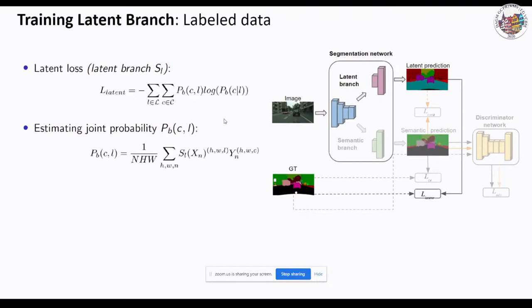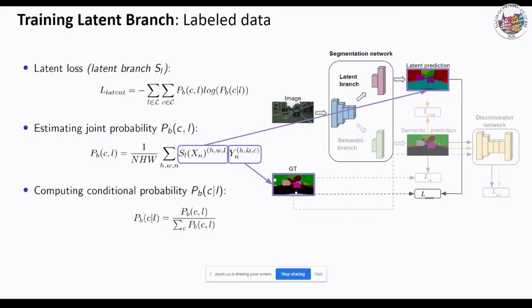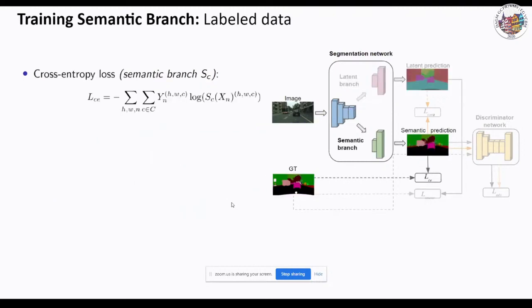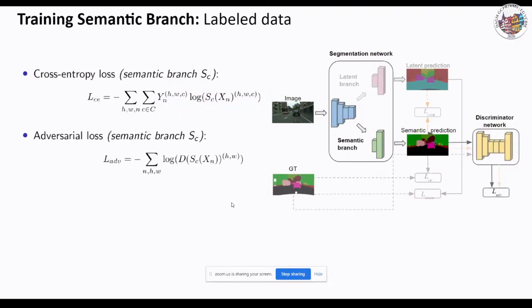To compute this loss term, we need to estimate the joint probability distribution and the conditional probability distribution of semantic and latent classes. We estimate the joint probability distribution component-wise for each possible pair of semantic and latent classes — as the normalized sum of probabilities for the latent variable to be activated for pixels with a given ground-truth value C. On the labeled data, the loss function for the semantic branch contains two terms: the standard cross-entropy loss ensuring predictions are close to ground truth, and the adversarial loss encouraging more realistic predictions.